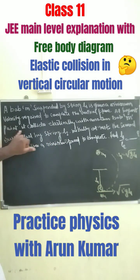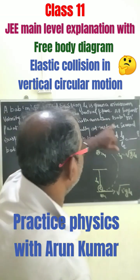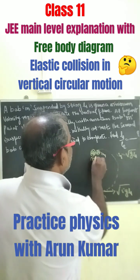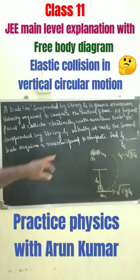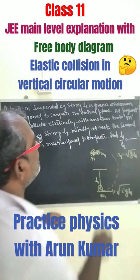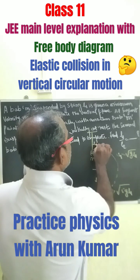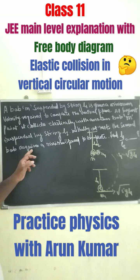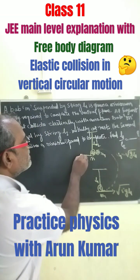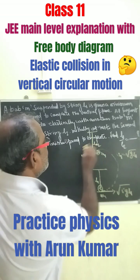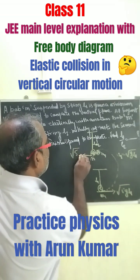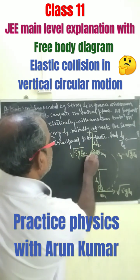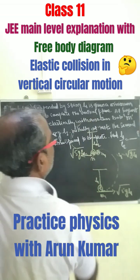At the highest point, the first bob collides inelastically with another bob, also of mass m, which is suspended by a string of length l2 and is initially at rest. The second bob acquires the minimum speed needed to complete its own vertical circle, which is √(5gl2).